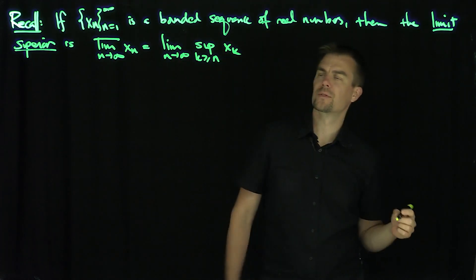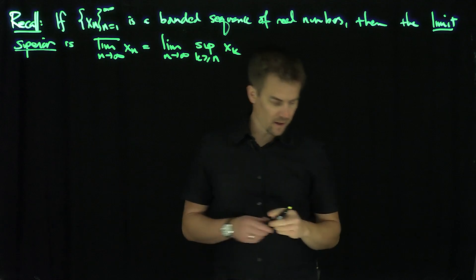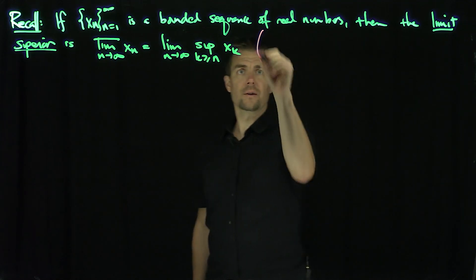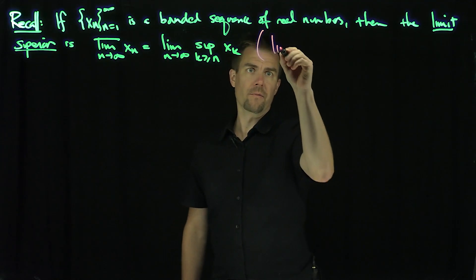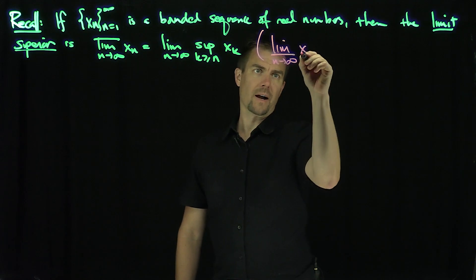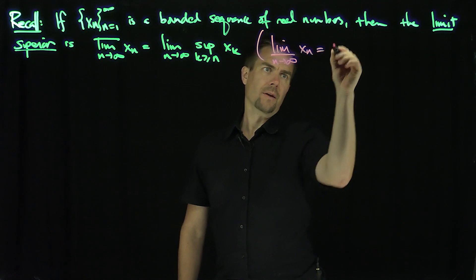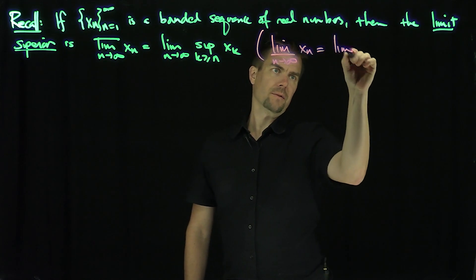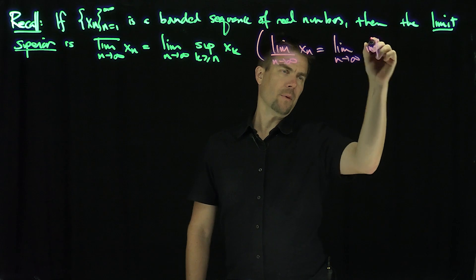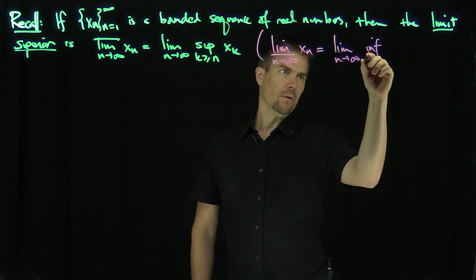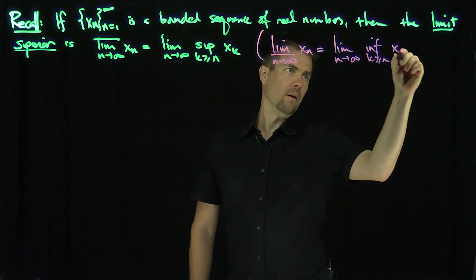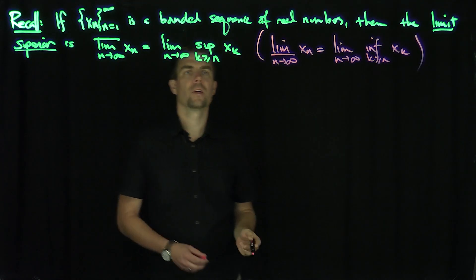That's what the lim sup is. And then analogously, the lim inf is defined by the following formula: the lim inf as n goes to infinity of x_n is the limit as n goes to infinity of the infimum over k greater than or equal to n of x_k.